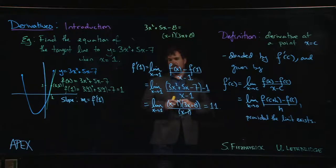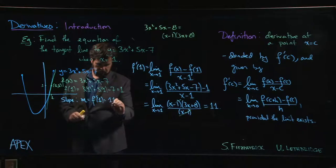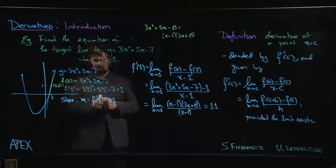So 11 is the slope. So now we can come over here, we can put that in. And now we need to write down the equation of the line.